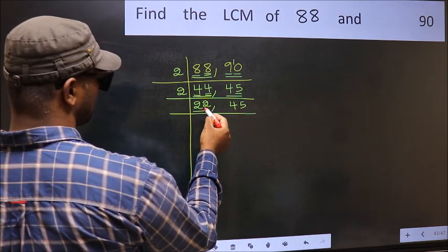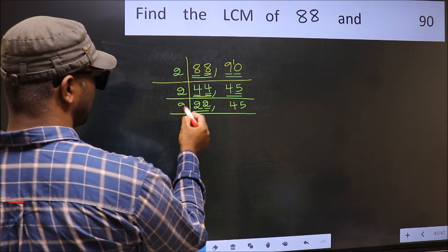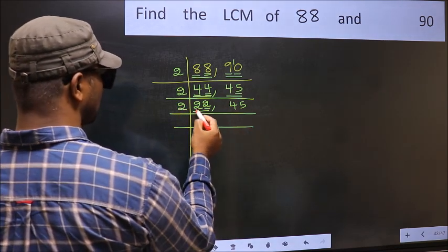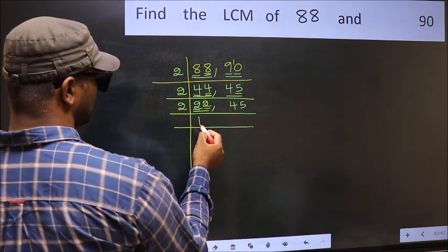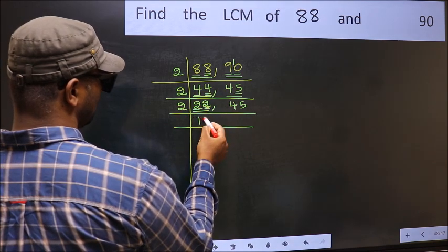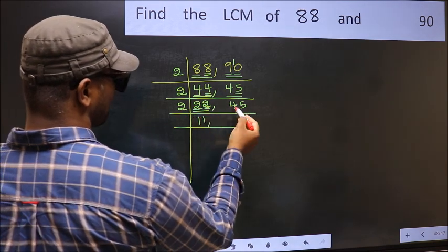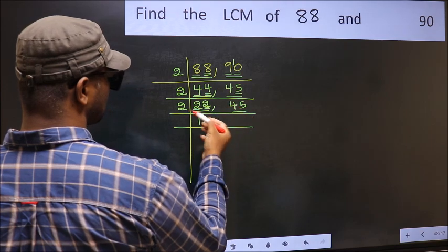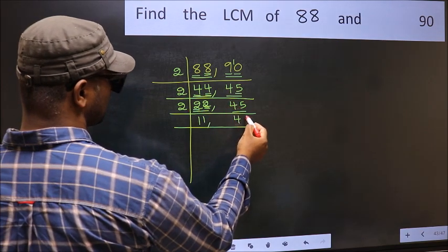Now here we have 22, last digit 2 is even, so take 2. First number 2, 2 times 1 is 2. The other number 2, 2 times 1 is 2. The other number 45, not divisible by 2, so write it down as it is.